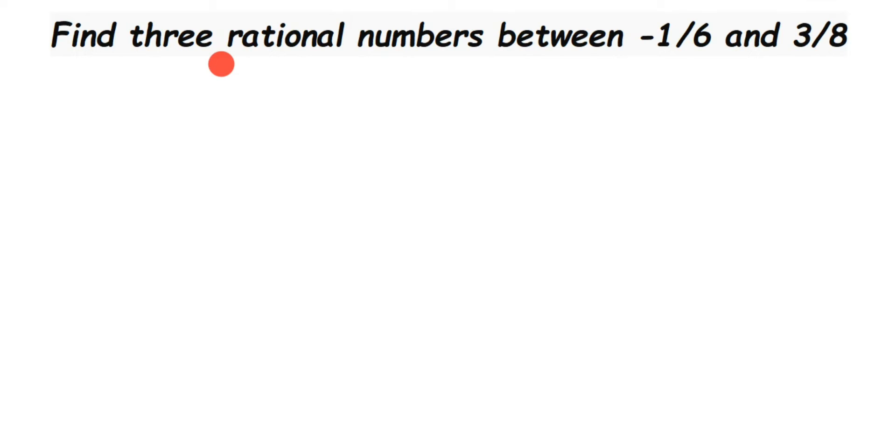Whenever two rational numbers are given, the main thing you should look for is the denominators. Check if denominators are same or not. So in this question we have denominator 6 and 8 which are not same. So if they are same then we can proceed further. If they are not same, the very first step will become we have to make it same.